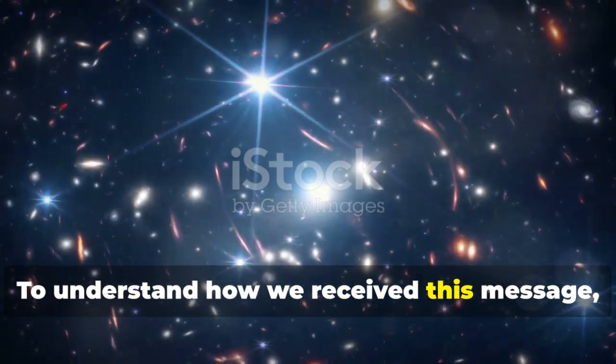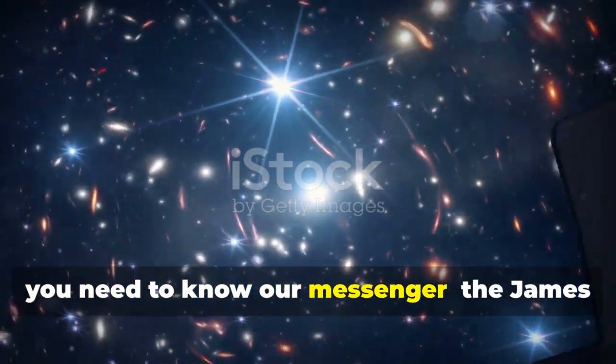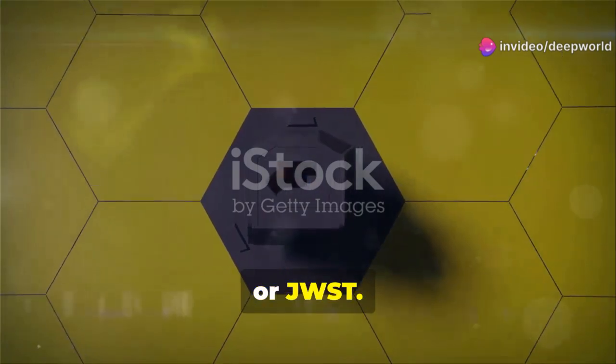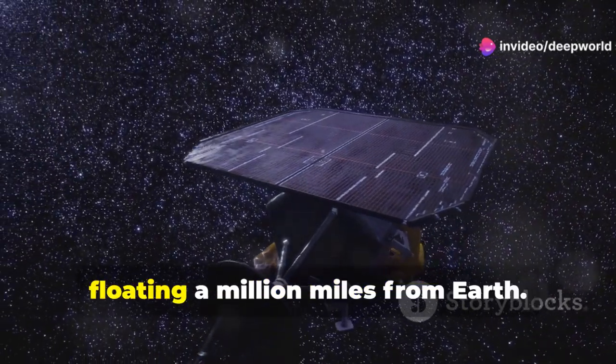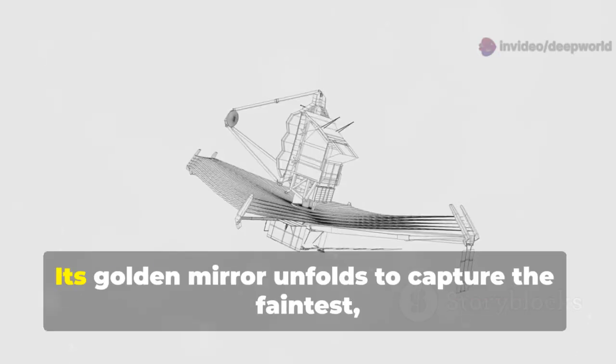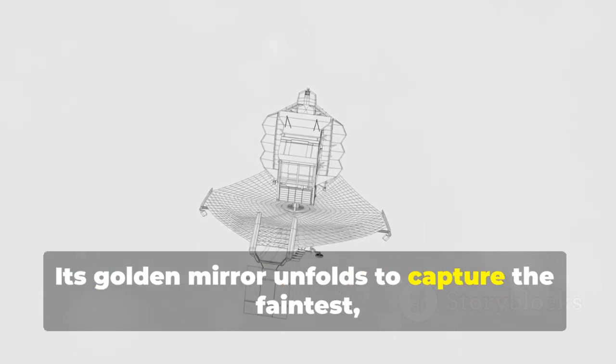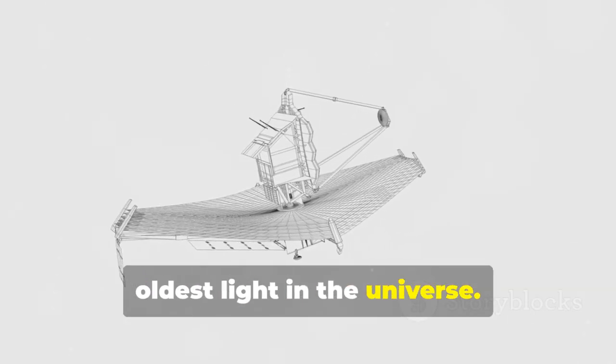To understand how we receive this message, you need to know our messenger, the James Webb Space Telescope or JWST. More than a telescope, it's a cosmic time machine floating a million miles from Earth. Its golden mirror unfolds to capture the faintest, oldest light in the universe.